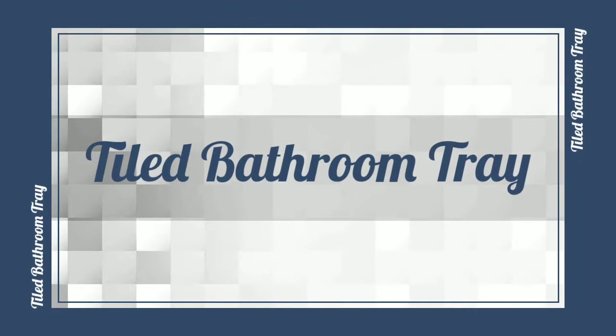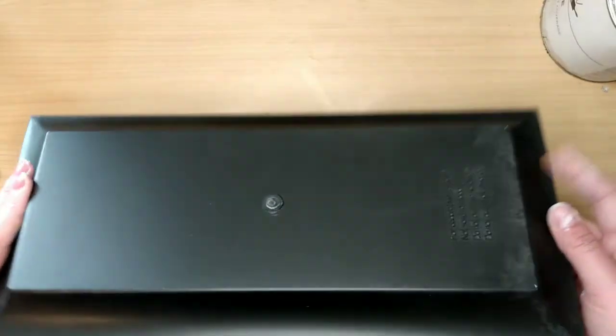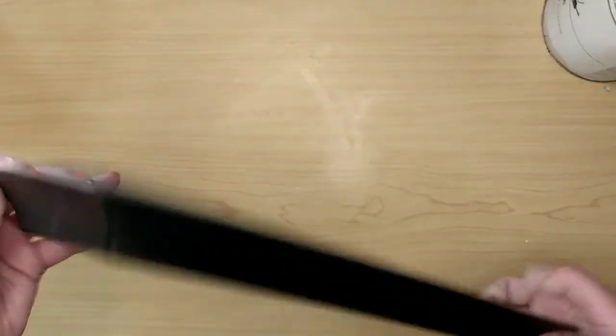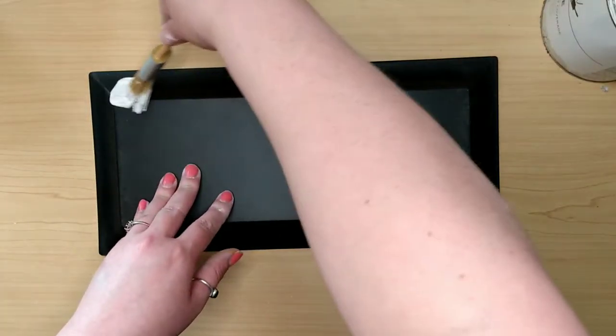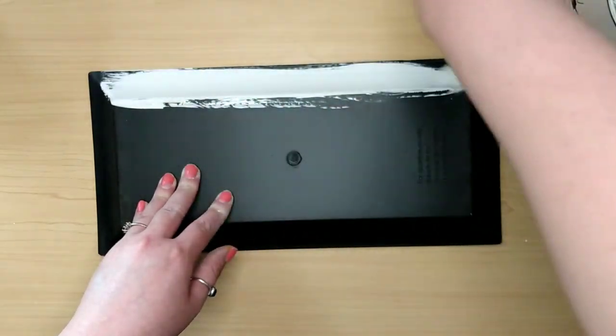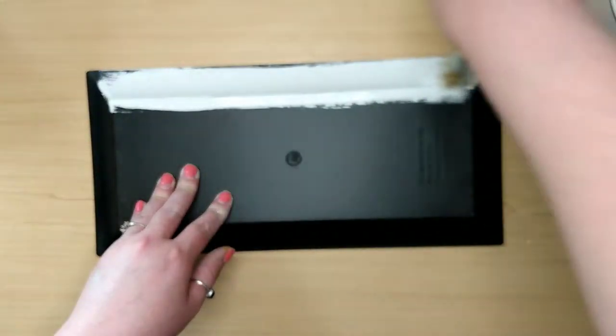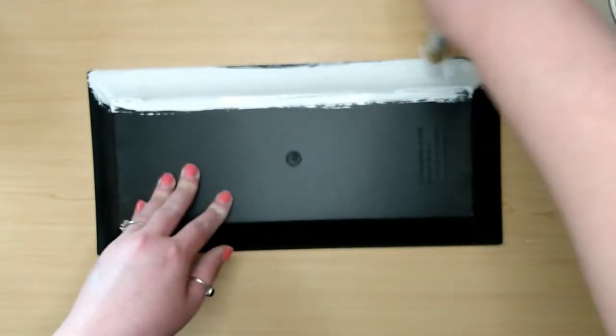For the tray, I used this Dollar Tree serving tray. These are their thicker, heavier ones. I'm not sure what other colors they come in, I do know they have silver, but I didn't care because I was painting it. I used the Rust-Oleum Linen white chalk paint, and this took like three coats to fully cover this.